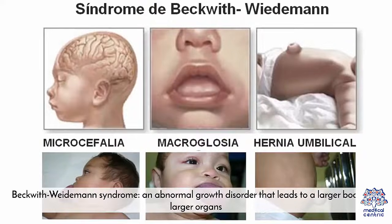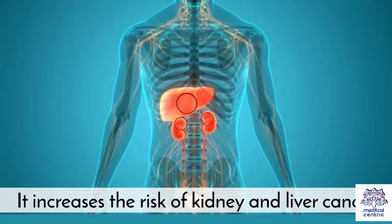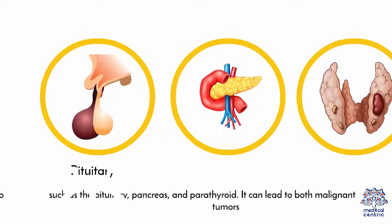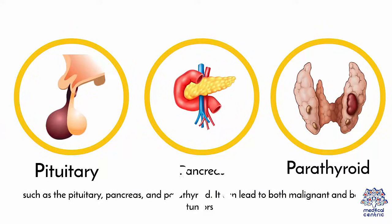Beckwith-Wiedemann syndrome, an abnormal growth disorder that leads to a larger body and larger organs. It increases the risk of kidney and liver cancer. Multiple endocrine neoplasia type 1 or MEN1, an inherited condition that causes tumors to develop in tissues and glands producing hormones, such as the pituitary, pancreas, and parathyroid. It can lead to both malignant and benign tumors.